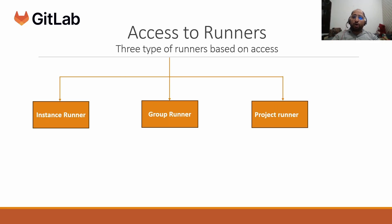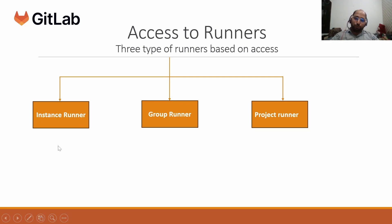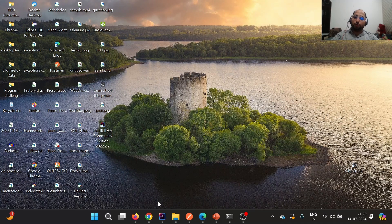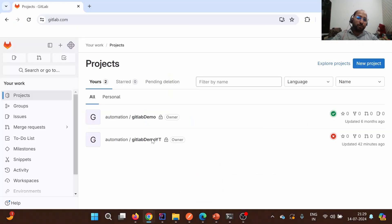Based on access, runners are categorized into three sections: instance runners, group runners, and project runners. In GitLab, we have a concept of groups, and under a group we can have many projects. Instance runners are accessible to all projects available under all groups. Group runners are utilized for all projects under a particular group. Project runners are available specific to a single project.